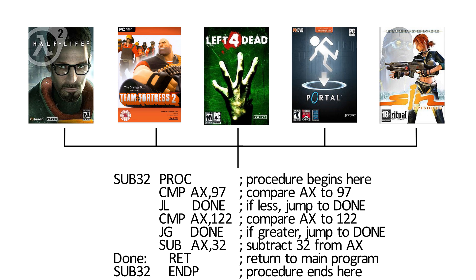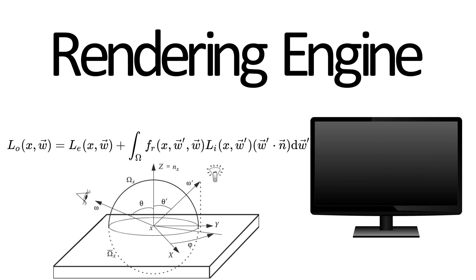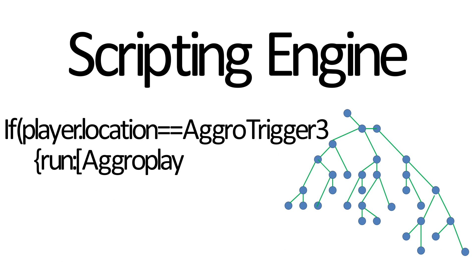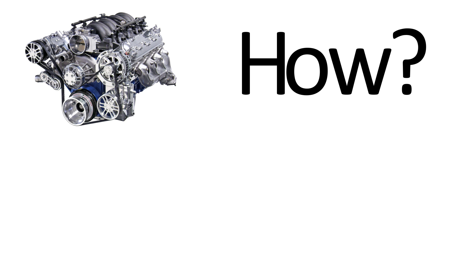Many of the things going on beneath the surface, such as the graphics rendering engine that calculates how to represent things on the screen, the physics engine which constantly checks to see if you've run into a wall or picked up an item, the scripting engine which figures out when to send your enemies to your location and what they should do when they get there, or other parts that produce sound, artificial intelligence, and animations — the game engine is how everything is done.